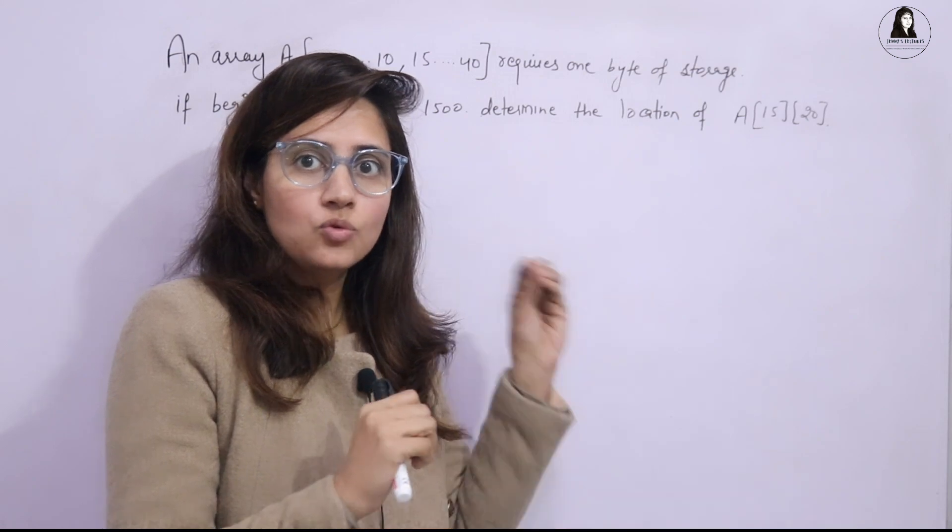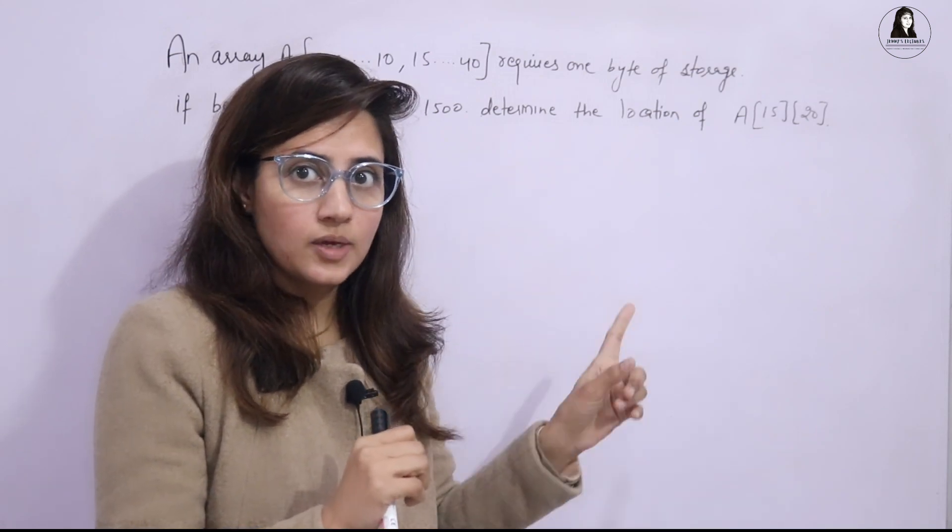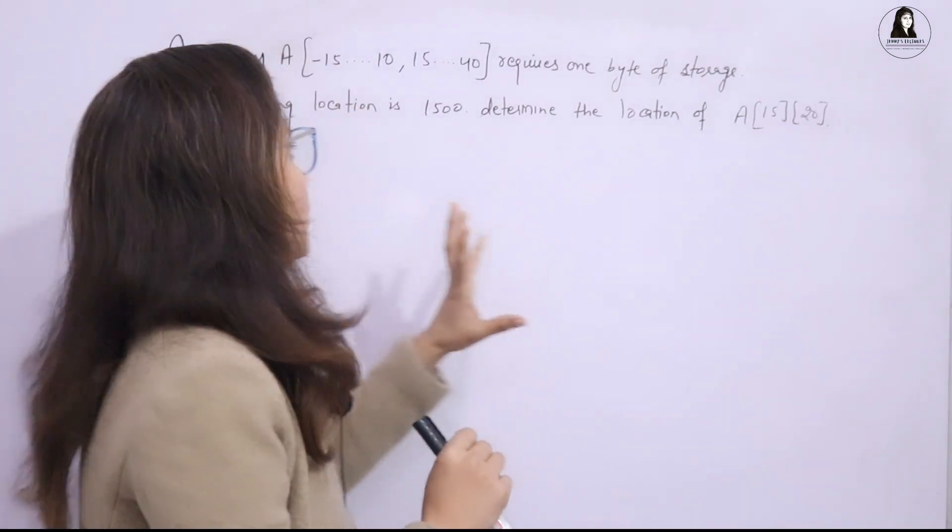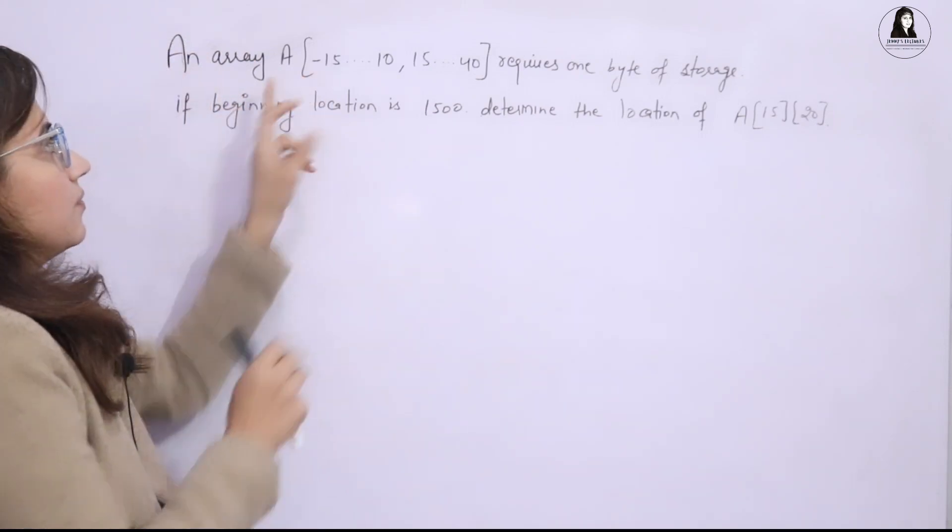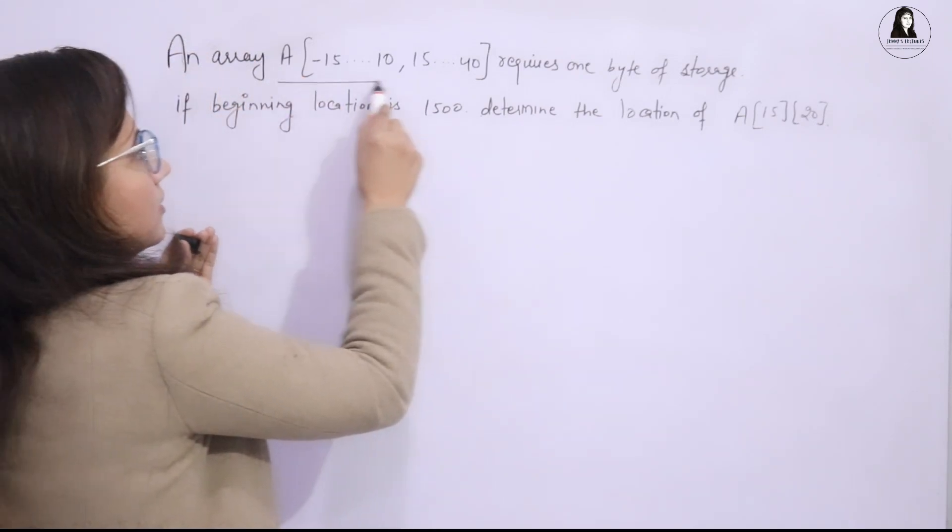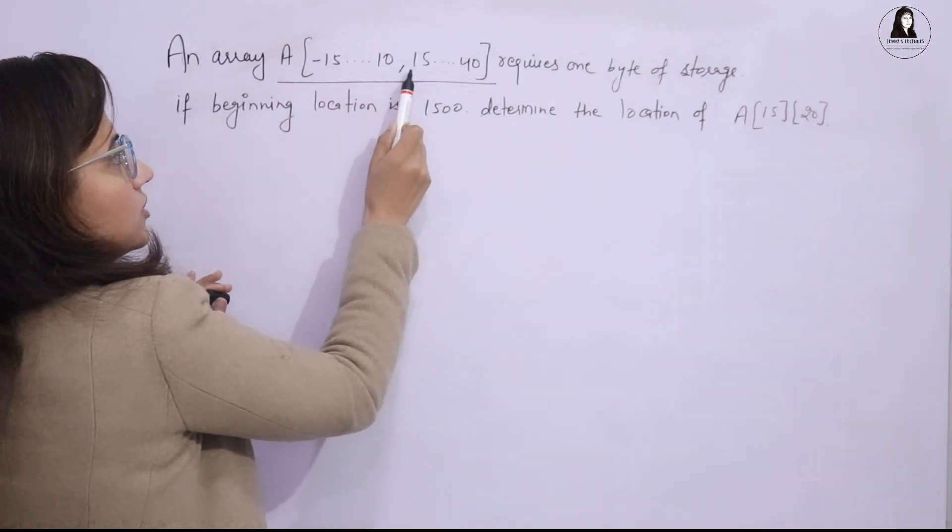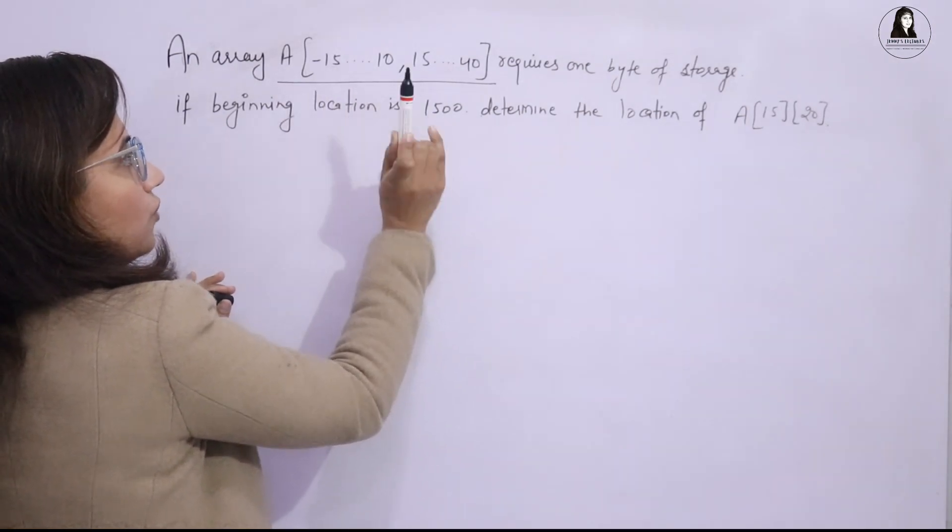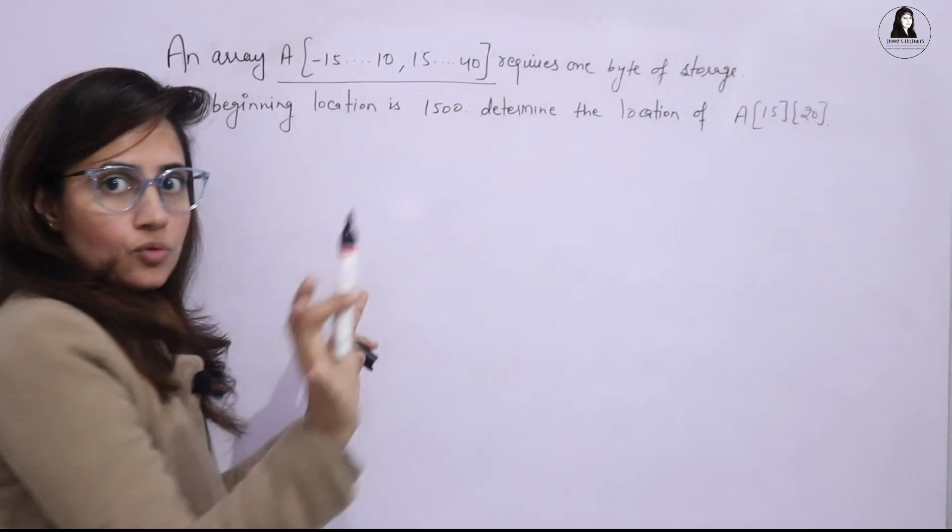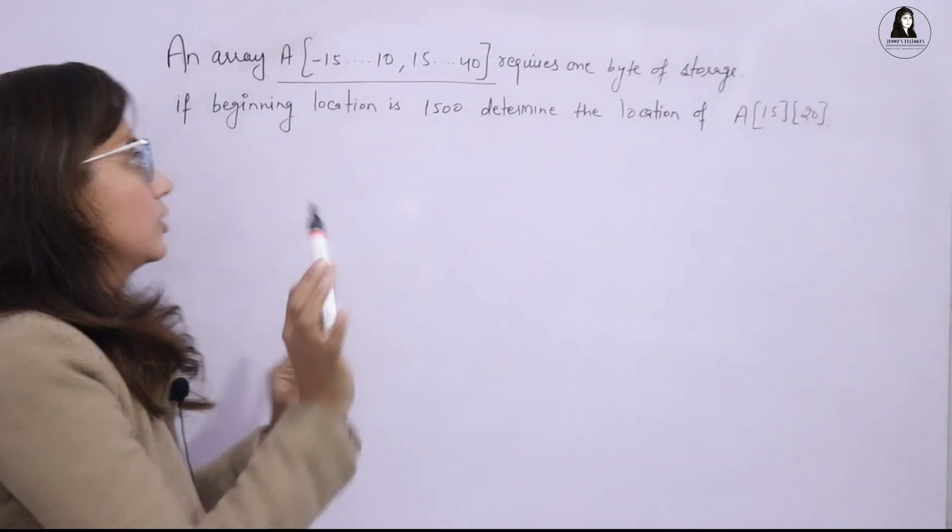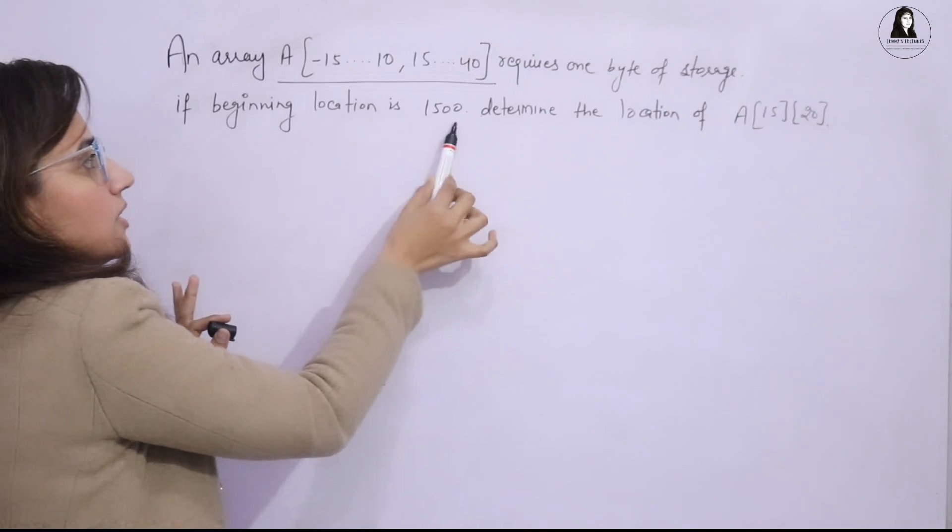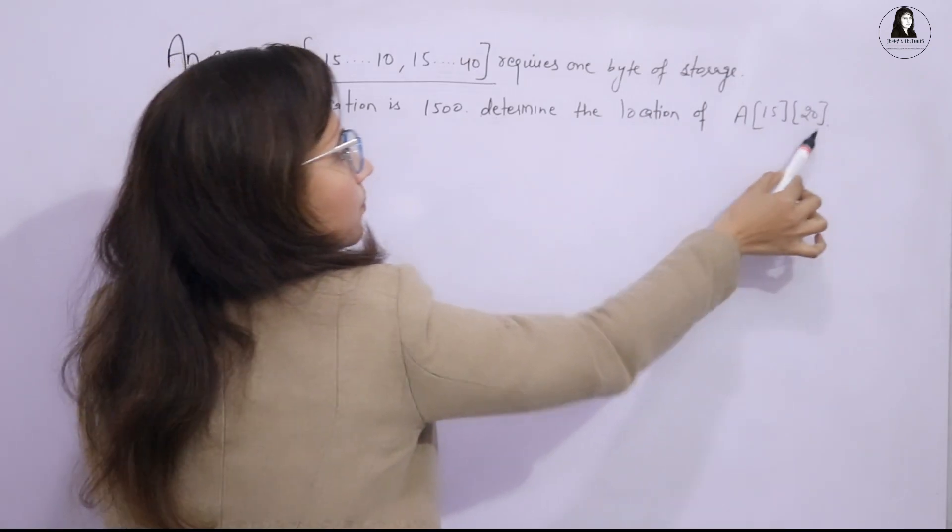Based on that only we have a coding exercise in this video. So what is the question? An array A[-15 to 10, 15 to 40], the row ranges and column ranges, requires one byte of storage. If the beginning location is 1500, then determine the location of element A[15][20].